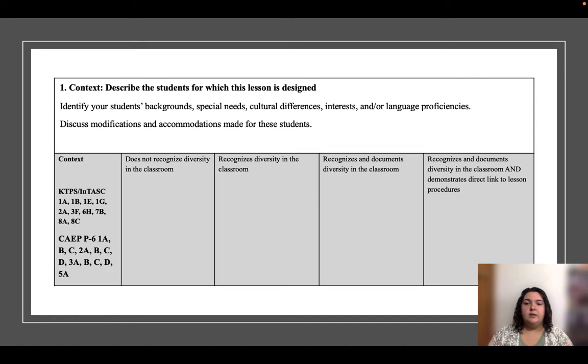Discuss modifications and accommodations for these students. Now you're going to write down what all you are going to do to help students succeed through accommodations and modifications. Students with IEPs or 504 plans have specialized modifications and accommodations that you have to follow by law. You will have a corresponding teacher to help you do this, but you will have to make sure that you include that in your lesson plan.